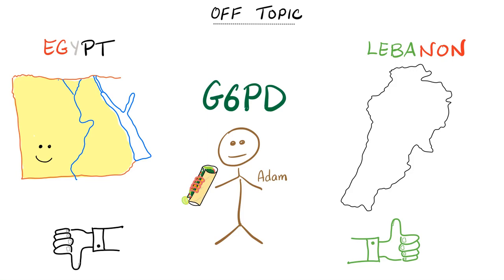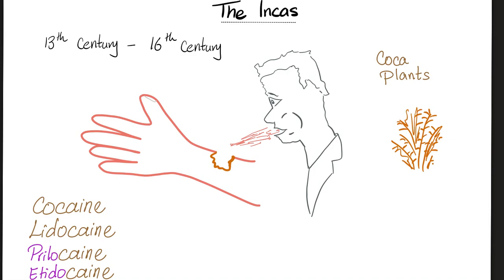Next, the Incas discovered that coca plants — aka cocaine — have some analgesic effects. Analgesic: 'an' means no, 'algesia' means pain — no pain. The doctor would chew coca plants and spit the extracts into the patient's wound to alleviate the pain of surgery. This is the exact same thing that the surgeon or dentist does today using cocaine, lidocaine, prilocaine, etidocaine, bupivacaine, etc. — hashtag local anesthesia.